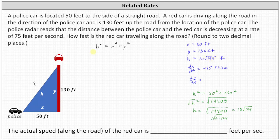Before we differentiate both sides of the equation with respect to T, we can perform a substitution for X because X does not change as the car drives down the road. X always remains equal to 50 feet, and therefore we can substitute 50 for X, giving us the equation H squared equals the square of 50 plus Y squared.